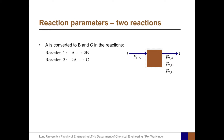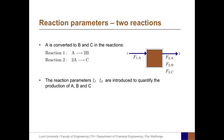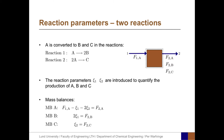In a two-reaction example, reaction 1 transforms A to 2B, and reaction 2 transforms 2A to C. We have four stream variables and must introduce two reaction parameters, xi1 and xi2, each representing one of the reactions. The mass balance for A is F1A minus xi1 minus 2xi2 equals F2A, because A reacts in both reactions. For B: 2xi1 equals F2B, since 2B are produced each time reaction 1 proceeds. For C: xi2 equals F2C, since C is produced in reaction 2.